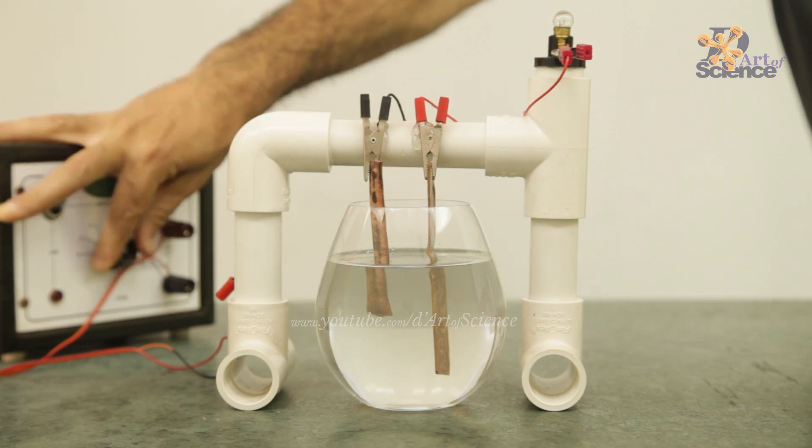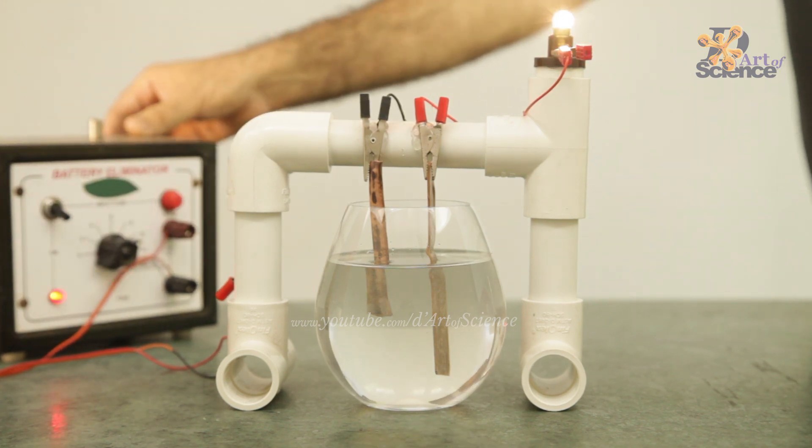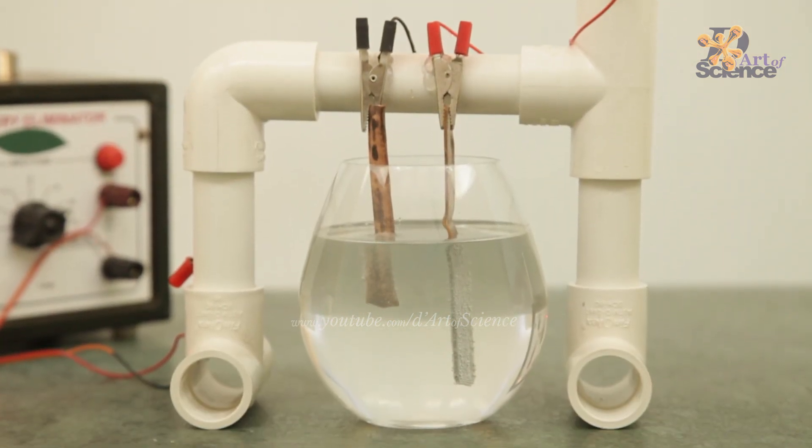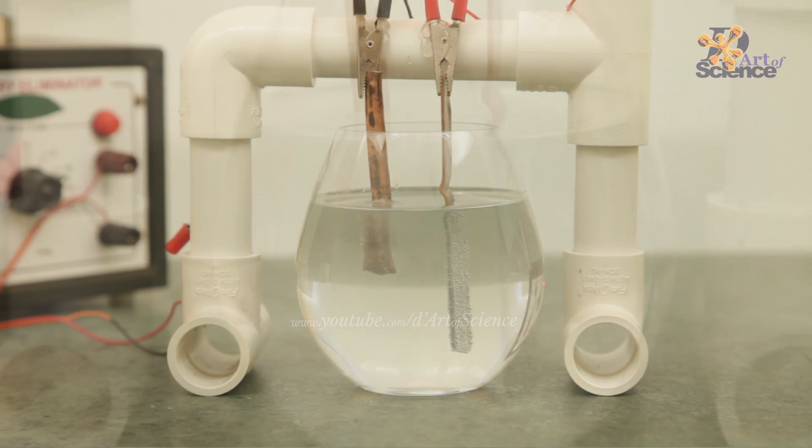Switch on the power. Its best to use the battery eliminator because otherwise the batteries will keep dying while doing this experiment. But if you don't have an eliminator, then use a total of 6 or 9 volt batteries.